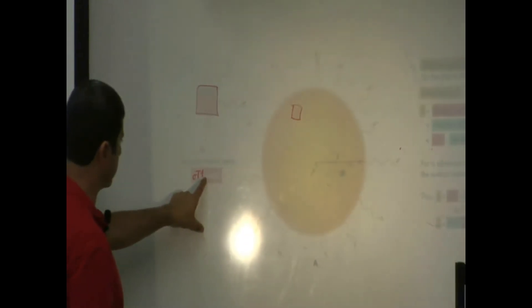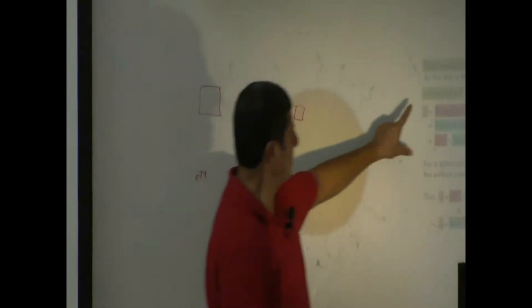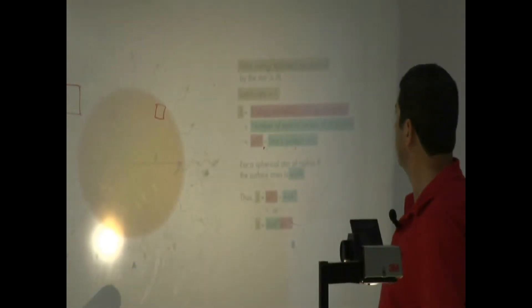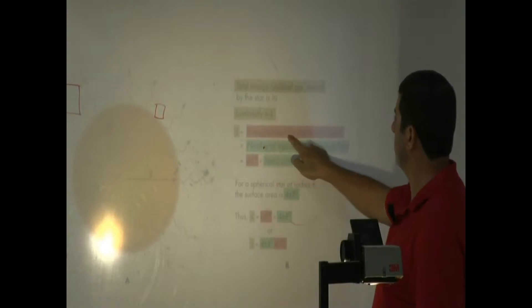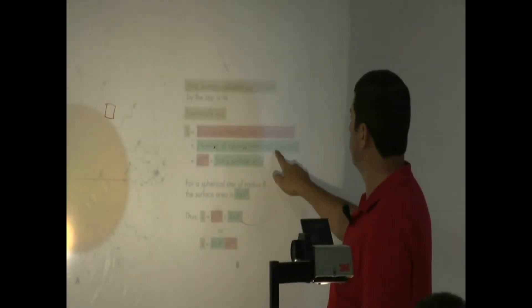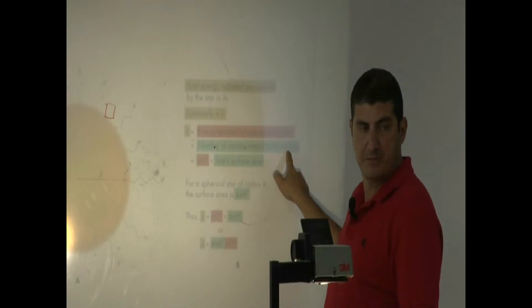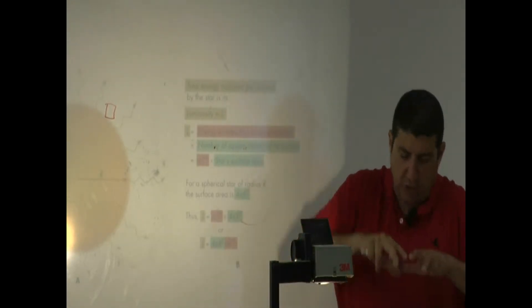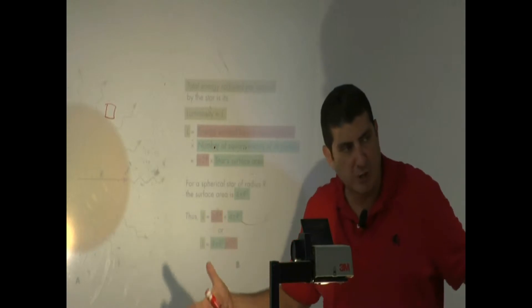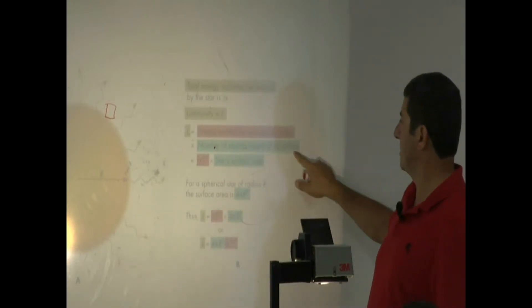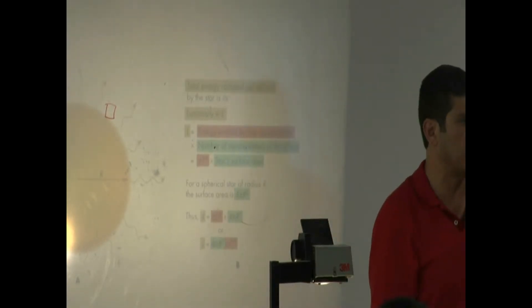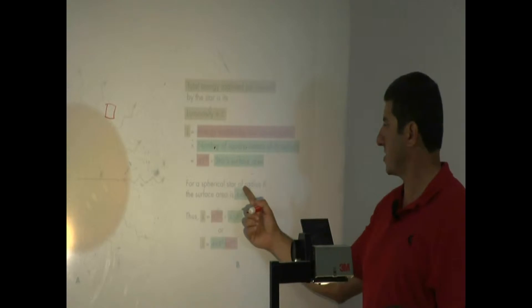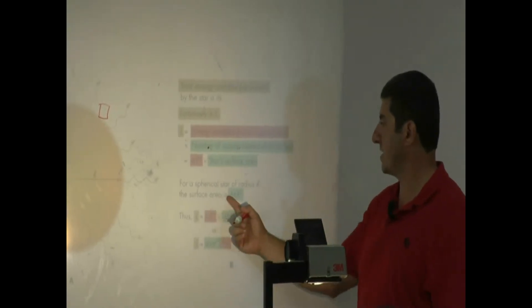Then you say, okay, what does that mean? The total energy radiated per second by the star is its luminosity. Luminosity is energy emitted by one square meter times the number of square meters of its surface. So if you take one square meter and then multiply by how many square meters there are — the number of square meters of its surface — what is a star's surface area? For a spherical star of radius R, the surface area is 4πR².